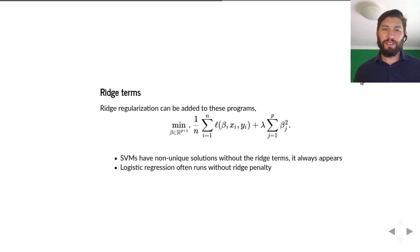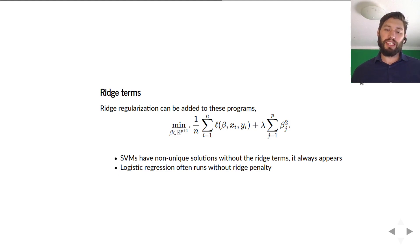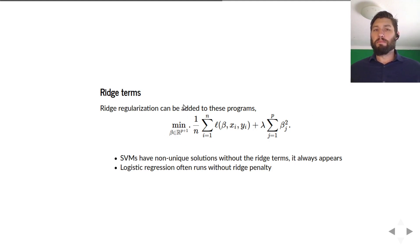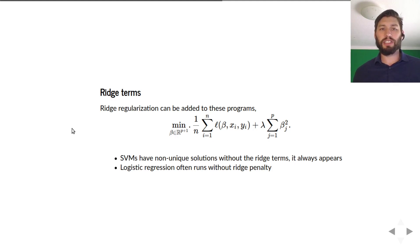We're going to finish up talking about binary classification — the discriminative methods for binary classification — and this is all for linear methods. We're going to close out by talking about other more classical interpretations of logistic regression and support vector machines so that you can get a more well-rounded education here.